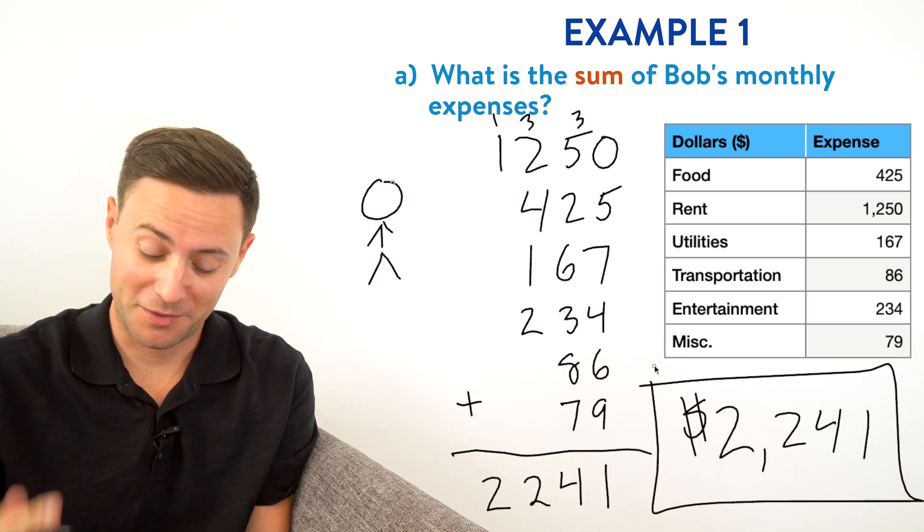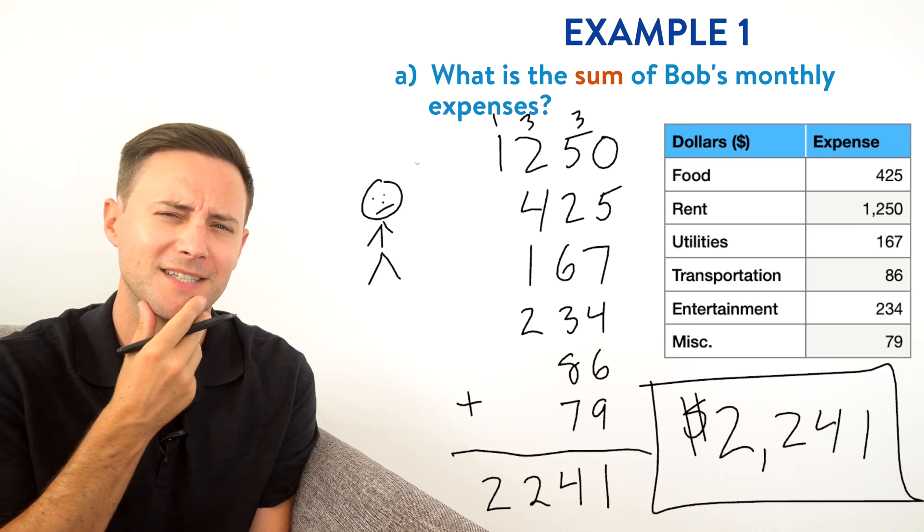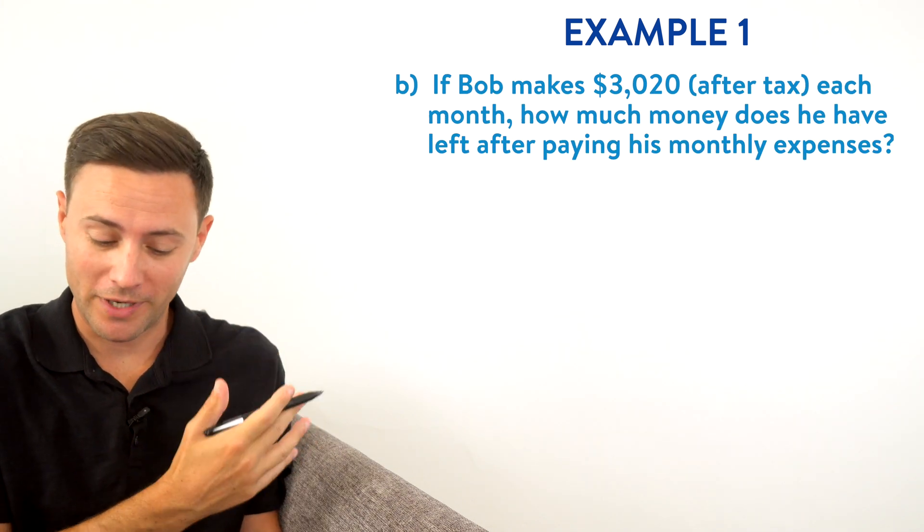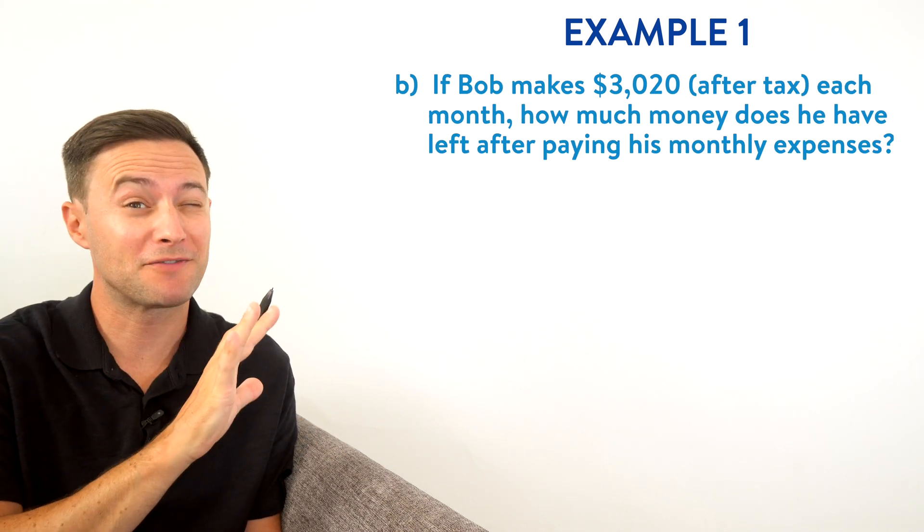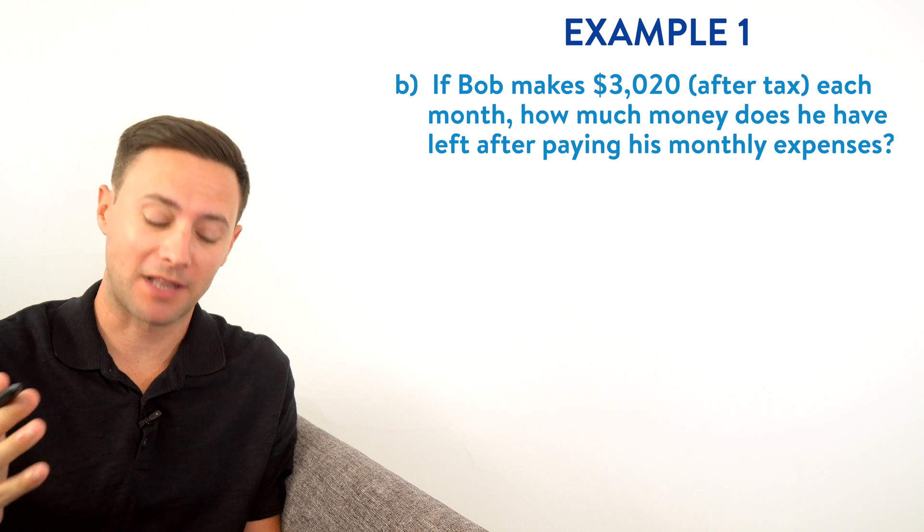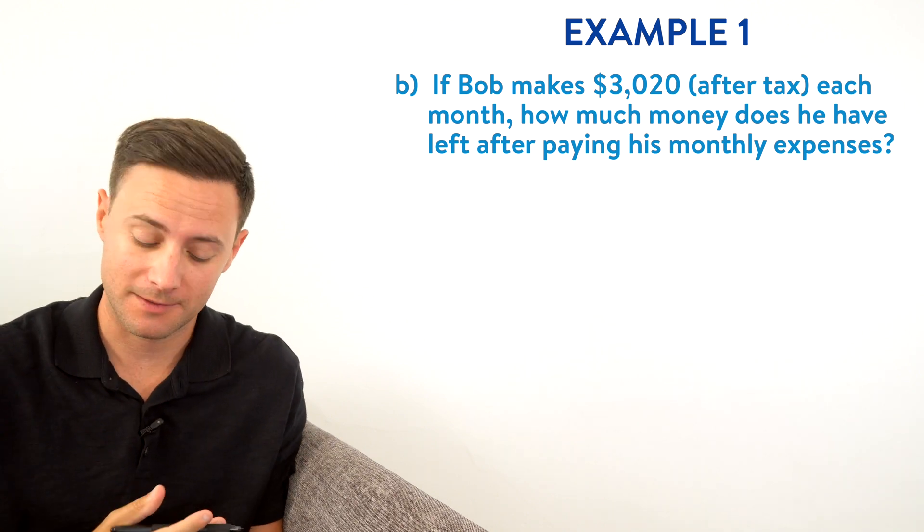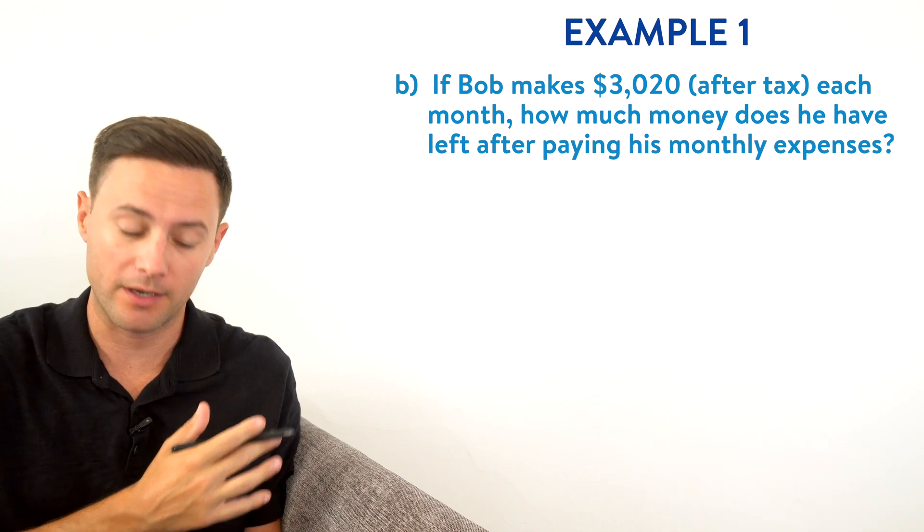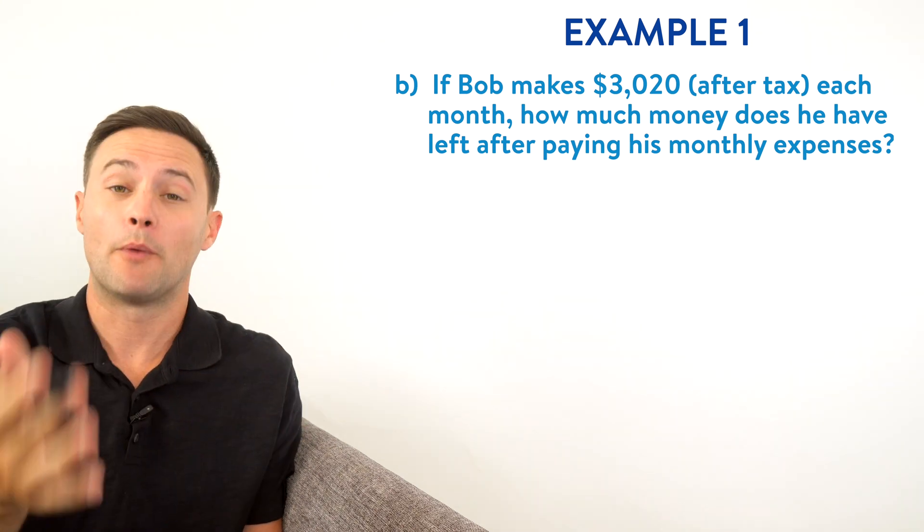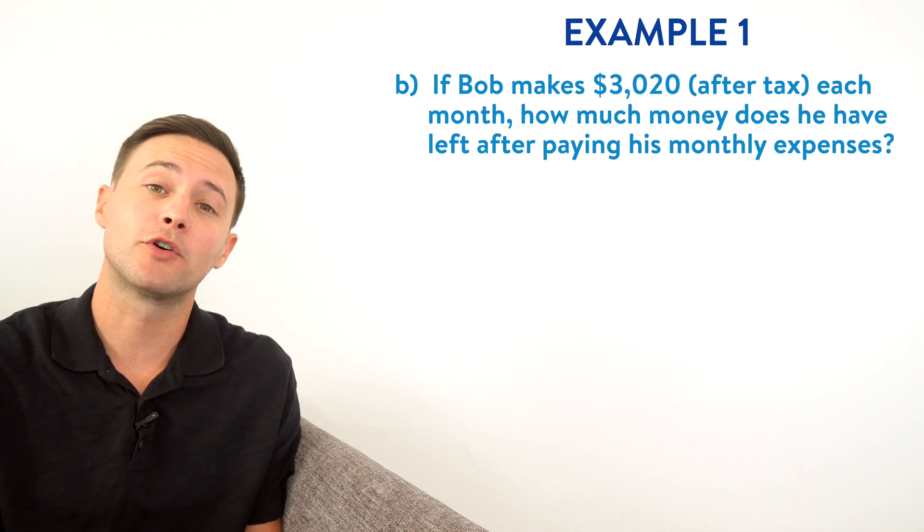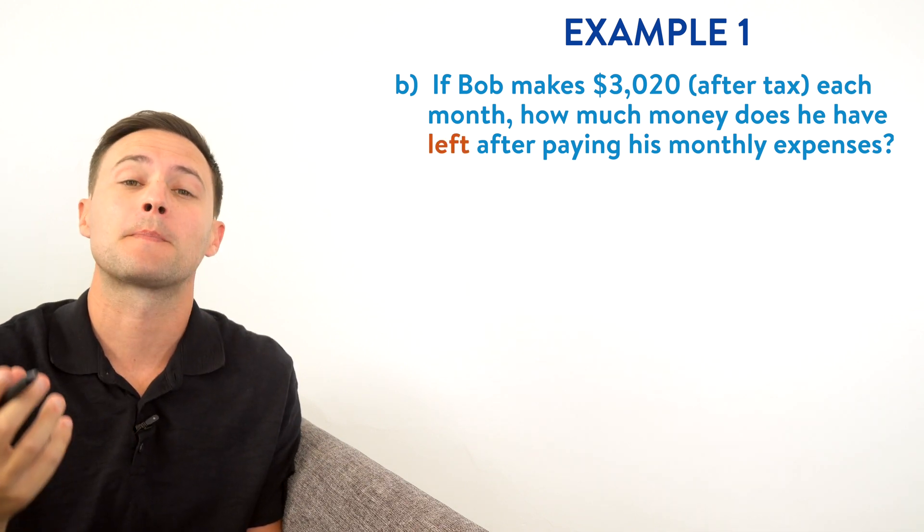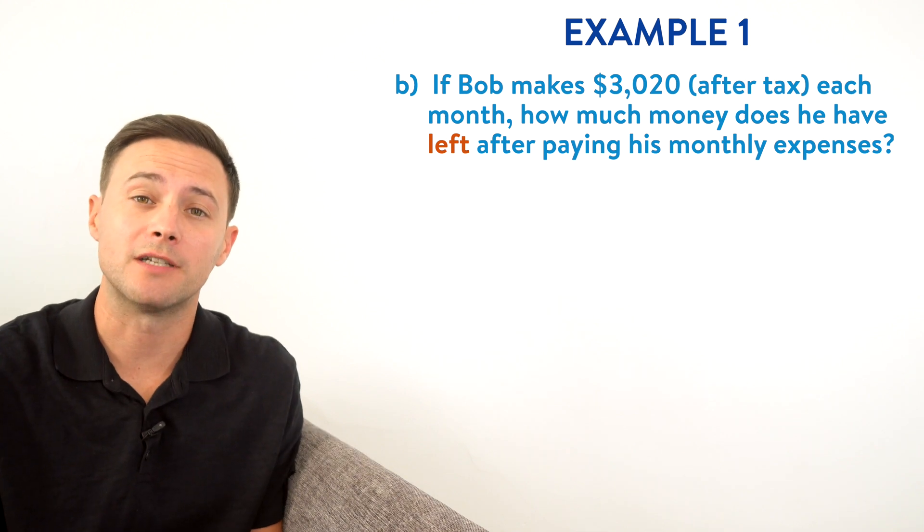And Bob is probably thinking, that's a lot of expenses each month. All right, let's try part B. If Bob makes $3,020 after tax, how much does he have left after paying his monthly expenses? We already know how much his monthly expenses are. We just found that out in the problem before and we know how much he's making each month. So to find out how much he has left, that's the key word there. We just need to do subtraction.